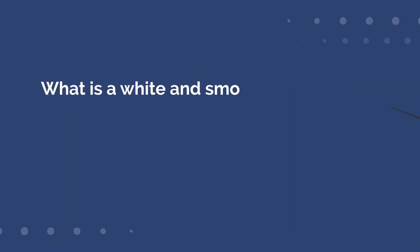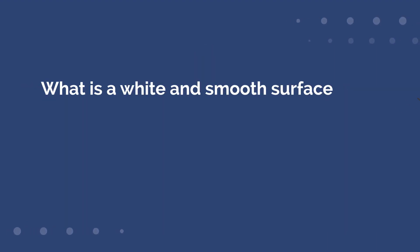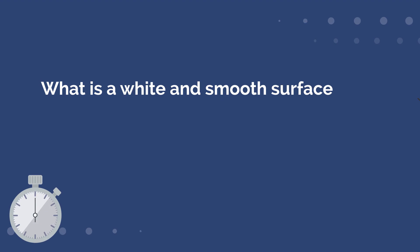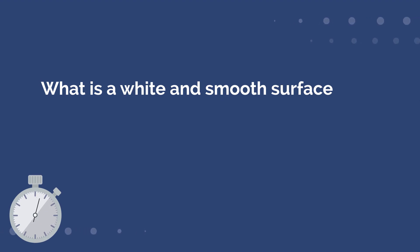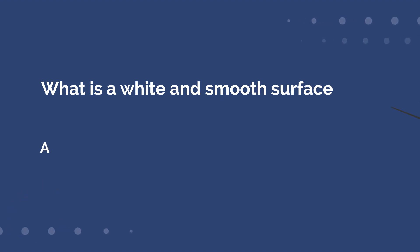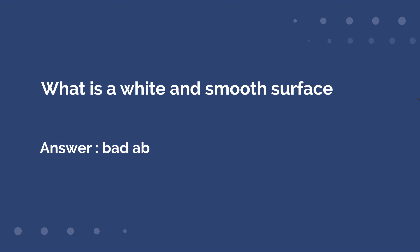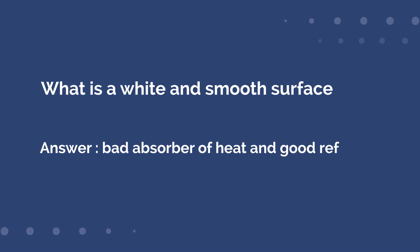What is a white and smooth surface? Answer: A bad absorber of heat and good reflector.